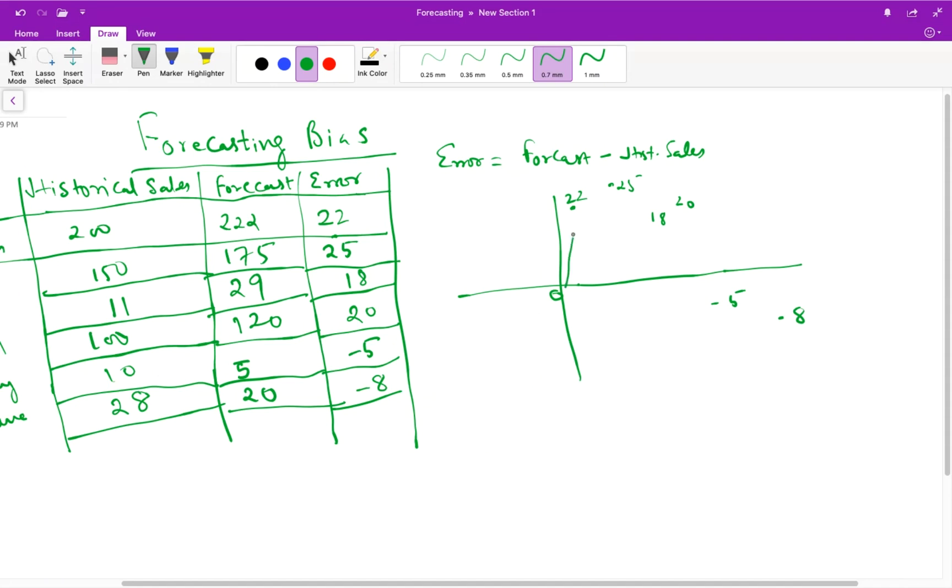If I draw the graph, join these points. So what I see, most of the errors are on the positive side. Most of the errors are on the positive side. The errors which are below the 0 are minus 5 and minus 8.